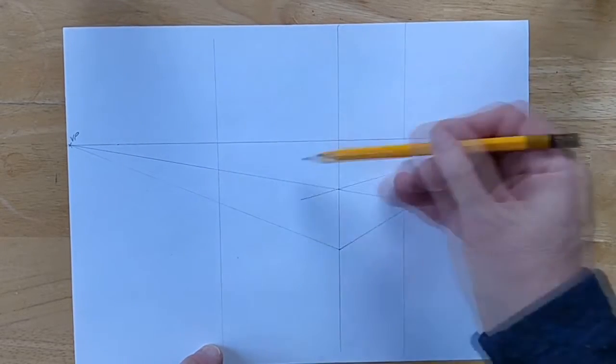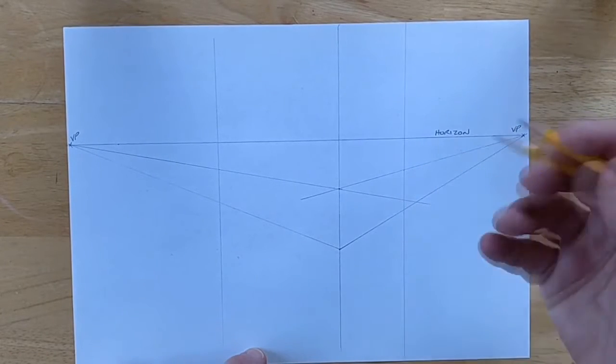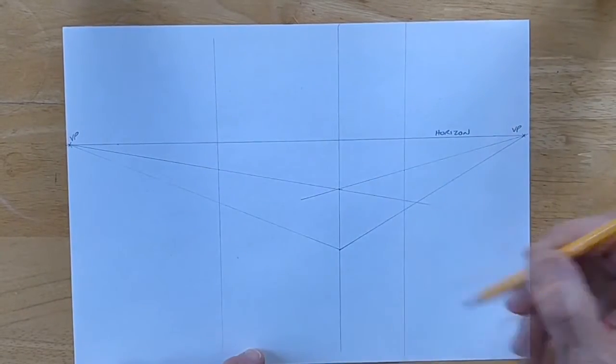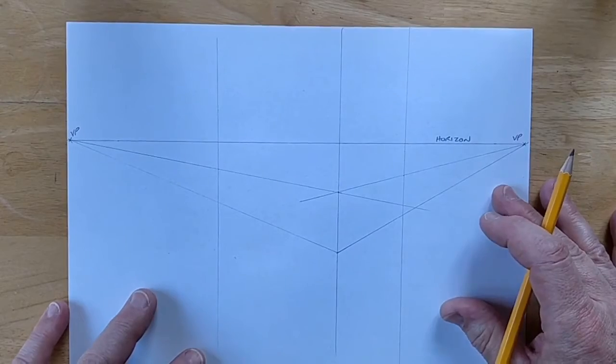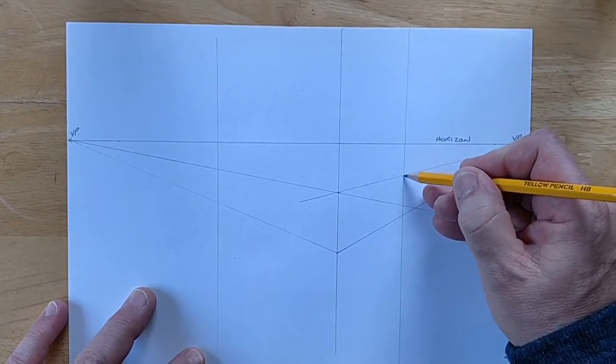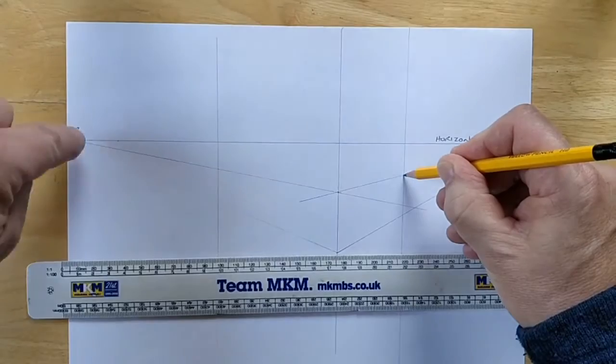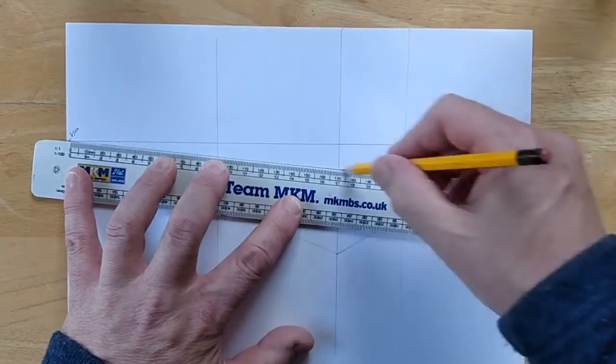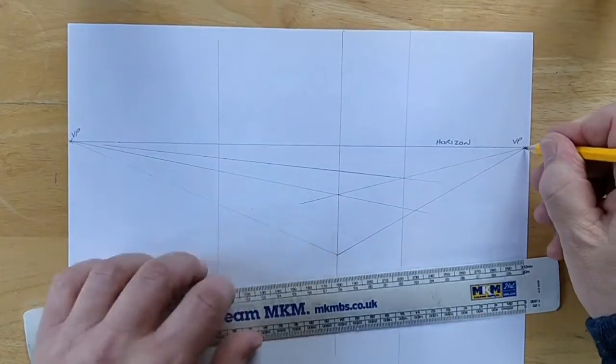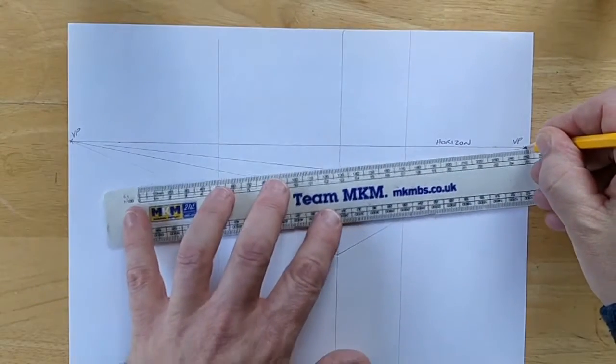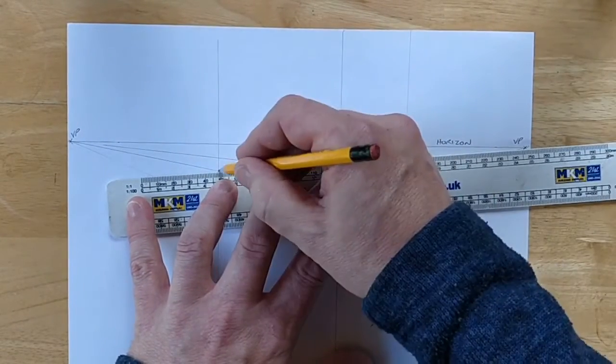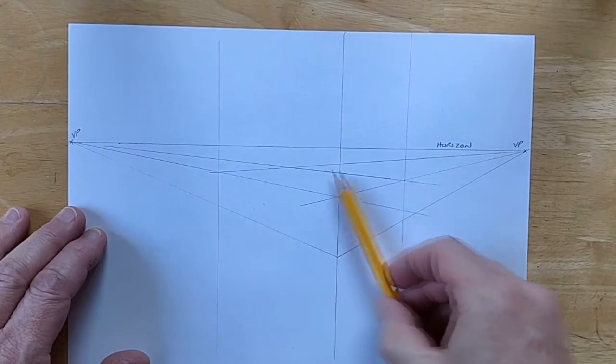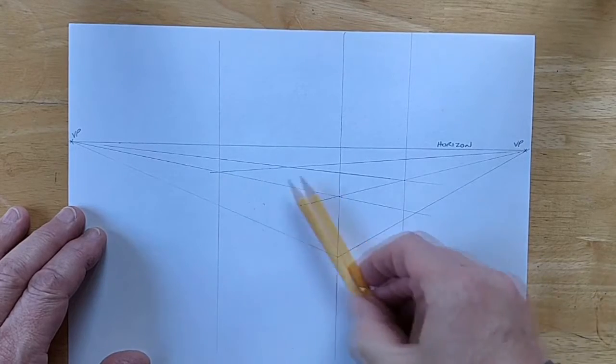We now need to put in the two back edges and this is the tricky bit. Lines can only go to one of the vanishing points. We've got our verticals, they're already on. All the other lines need to go to a vanishing point. So we need to decide which one. Now this corner at the right here, that needs to go across to this left hand vanishing point. So I'll put that in like that and then the opposite happens. The left hand point goes to the right hand vanishing point. Hopefully you can now see that we've got our box, three dimensional box outlined in front of us.